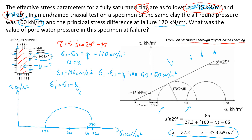For the effective minor principal stress it becomes sigma 3 minus pore pressure, and for the major principal stress it becomes sigma 1 minus pore pressure. Importantly, the deviator stress at failure is the same under total and effective stress conditions, so the circle size doesn't change. We simply shift the circle to the left by the amount of pore pressure.